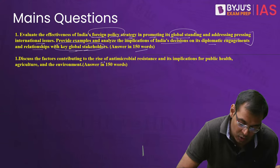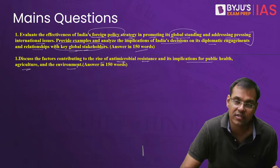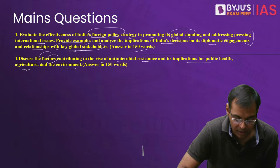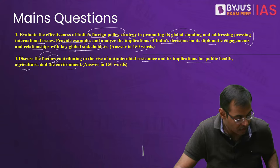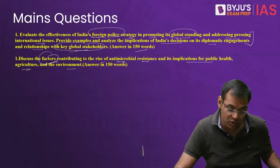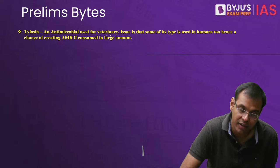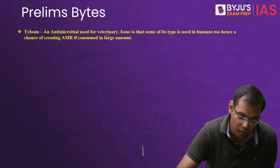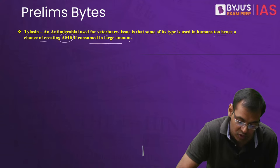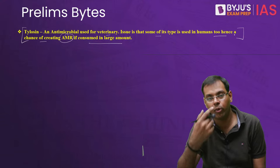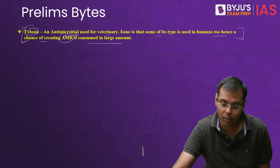Another mains question: discuss the factors contributing to the rise of antimicrobial resistance and its implications for public health, agriculture, and the environment. One term to note is Tylosin — an antimicrobial used in veterinary medicine — but some types are also used in humans. Hence, if consumed in large amounts, it creates AMR. The answer can be written using the graphics and factors discussed in the lecture.